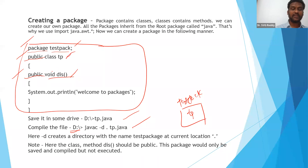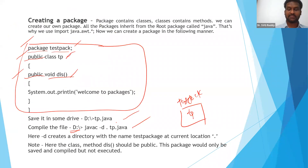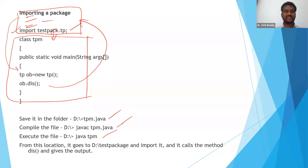Now compile and save the main file tpm.java using 'javac tpm.java', then execute with 'java tpm'. It should print 'welcome to packages'. Let's check how it exactly executes.